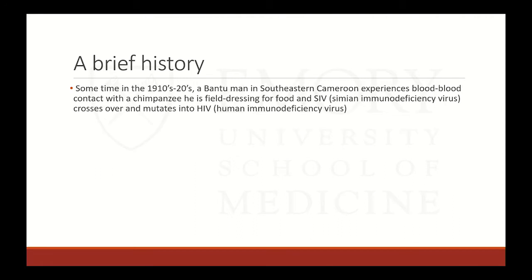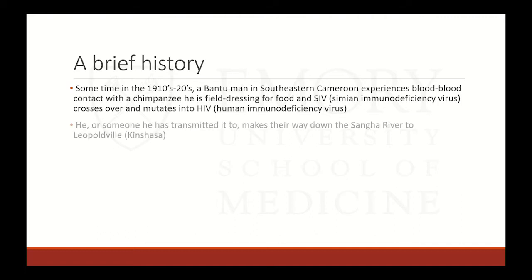Labor camps and urbanization resulted in extremely high population densities of young single males, which attracted prostitution. New railways and steamboat lines connected rural and urban environments as never before. Sometime in the 1910s to 1920s, a Bantu man in southeastern Cameroon — and we have data that pinpoints this location pretty accurately — experienced blood-blood contact with a chimpanzee he was field dressing for food. SIV, or simian immunodeficiency virus, crossed over and mutated into HIV.